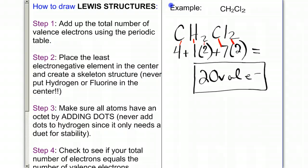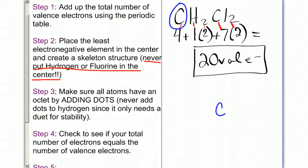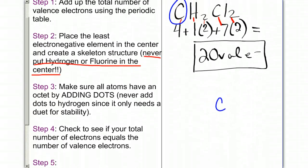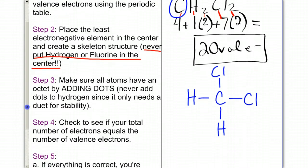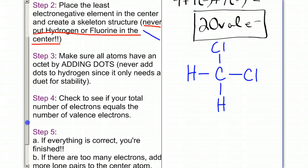Step two is going to be to place the least electronegative element in the center and create a skeletal structure. Never, ever put hydrogen or fluorine in the center. Any other element you can place in the center. Our least electronegative element in this case is carbon. So I'm going to place carbon in the center of my structure, and it's surrounded by two hydrogens and two chlorines. Remember, carbon can typically make four bonds. So I'm not really sure where they go, so I'm just going to randomly put my two hydrogens and my two chlorines on different ends of the carbon. This is my skeleton structure. That's step two.